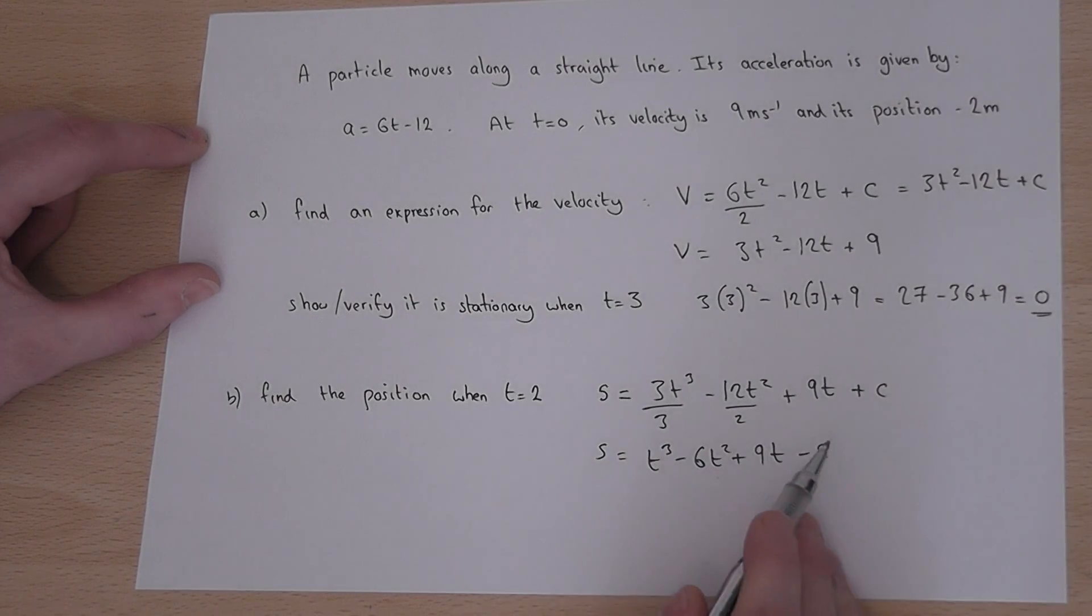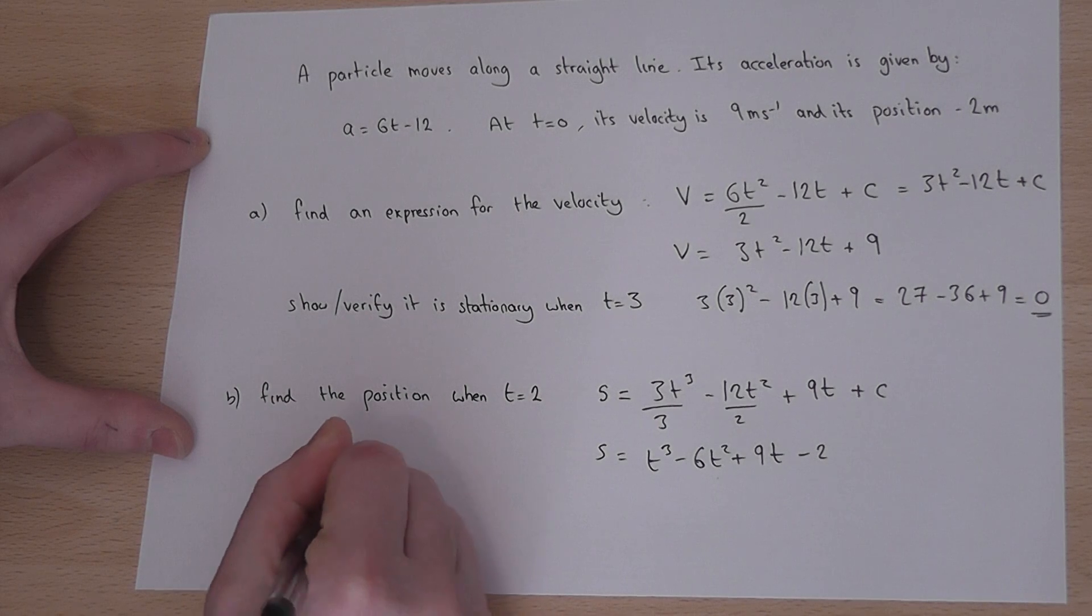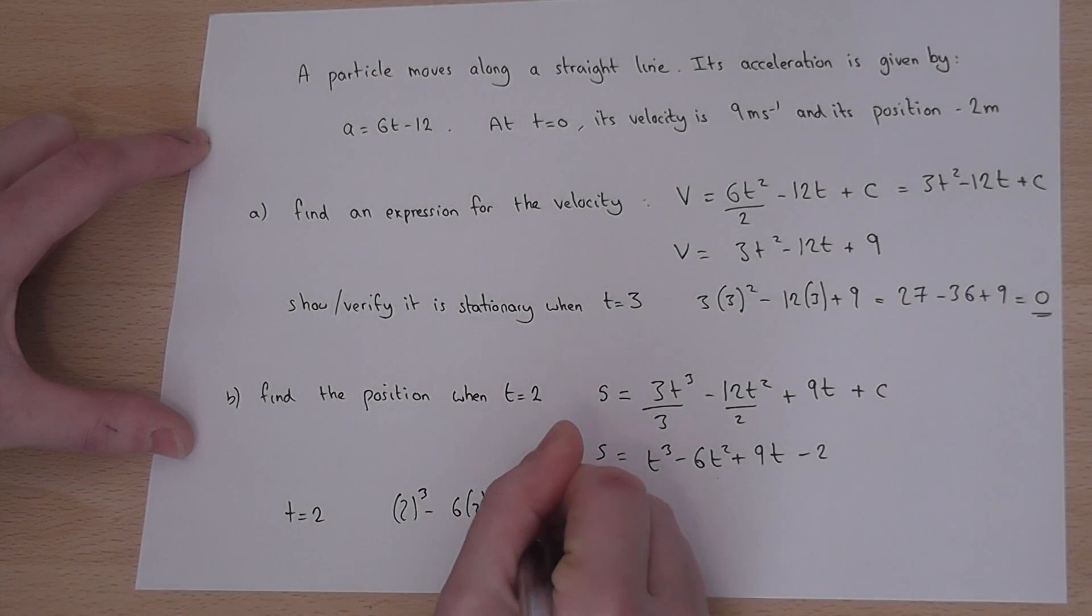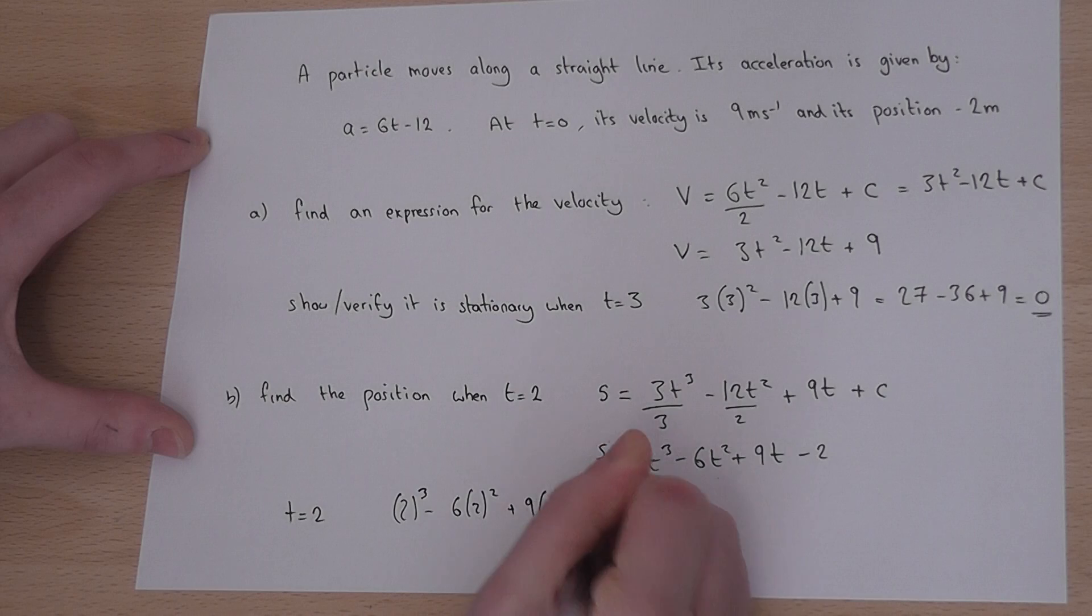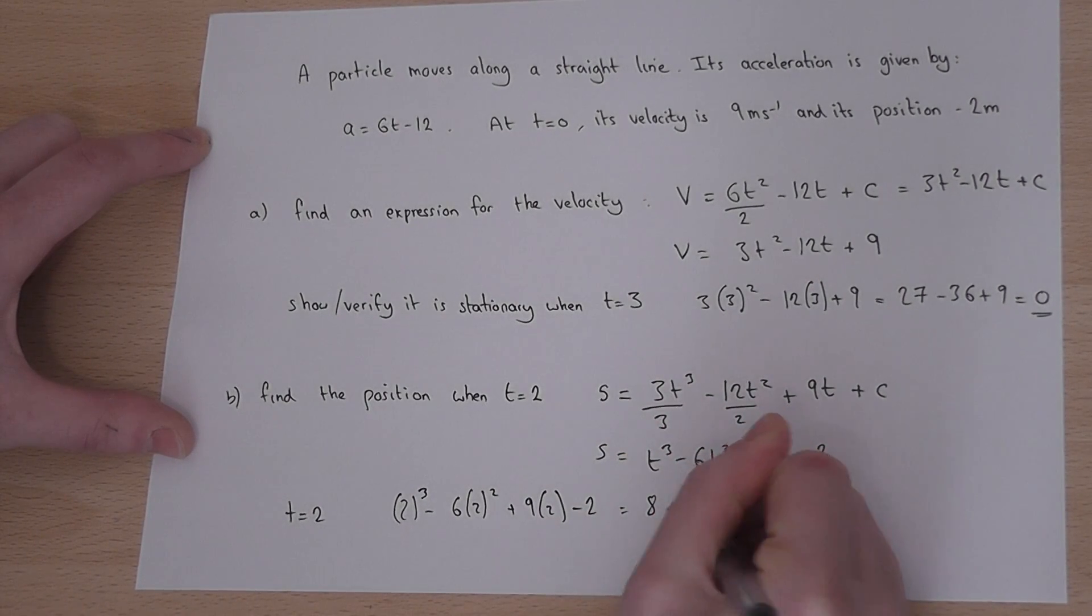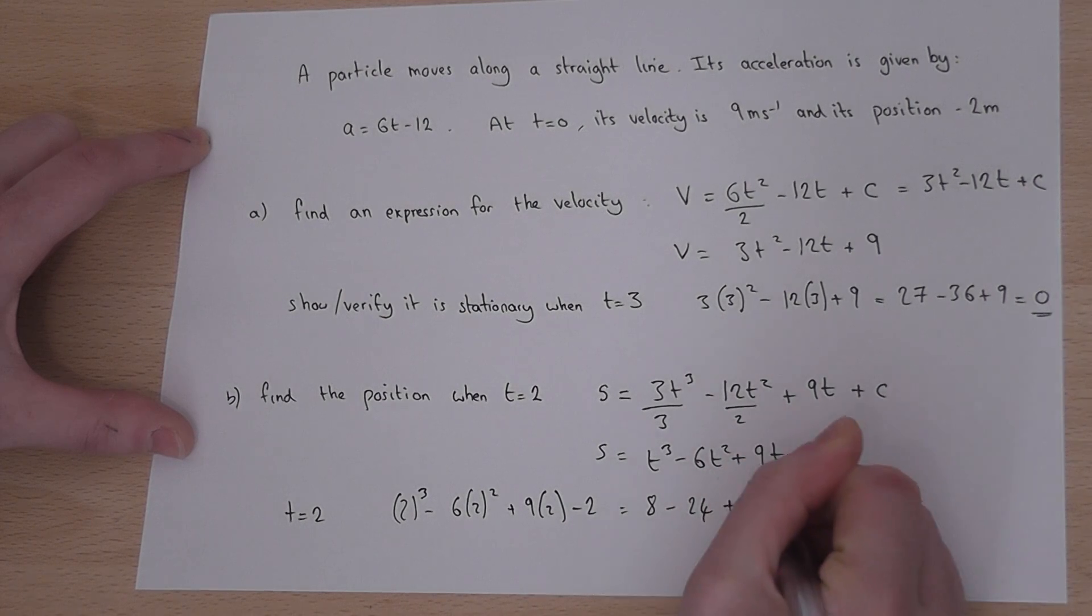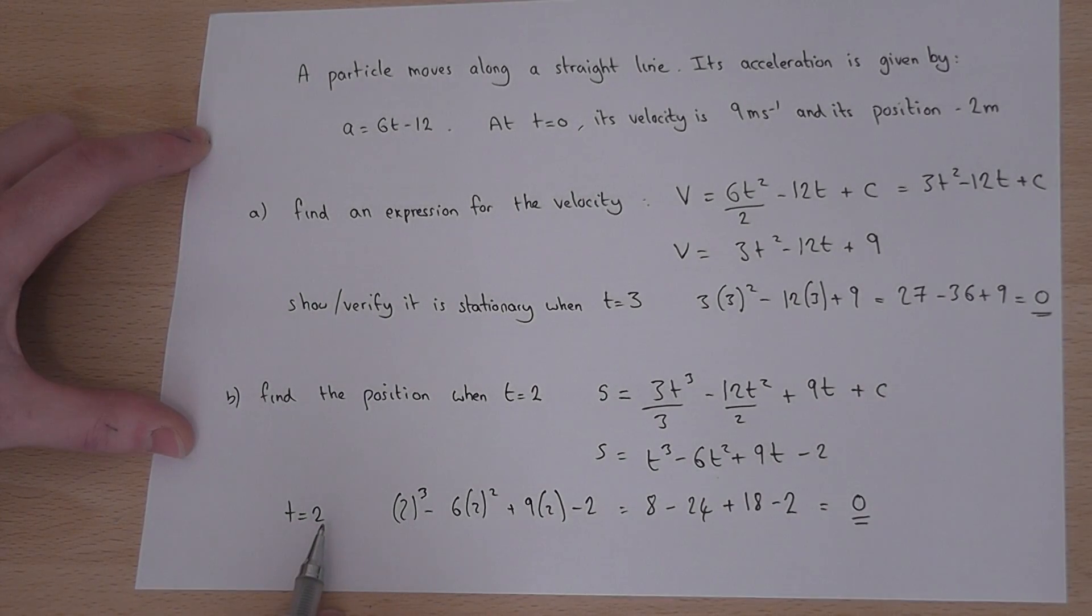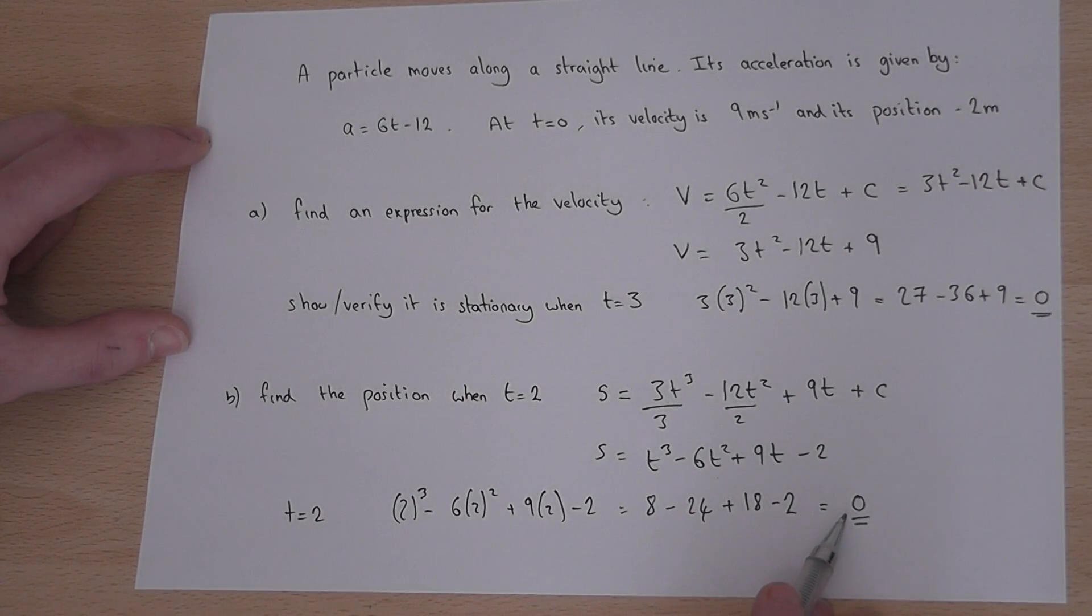We're asked to find the position when t equals 2. So if I now let t equal 2, then I get 2 cubed take away 6 times 2 squared plus 9 times 2 take away 2. So that equals 8 take away 24 plus 18 minus 2, which equals 0. So when t is 2, the particle is at position 0 relative to some given origin.